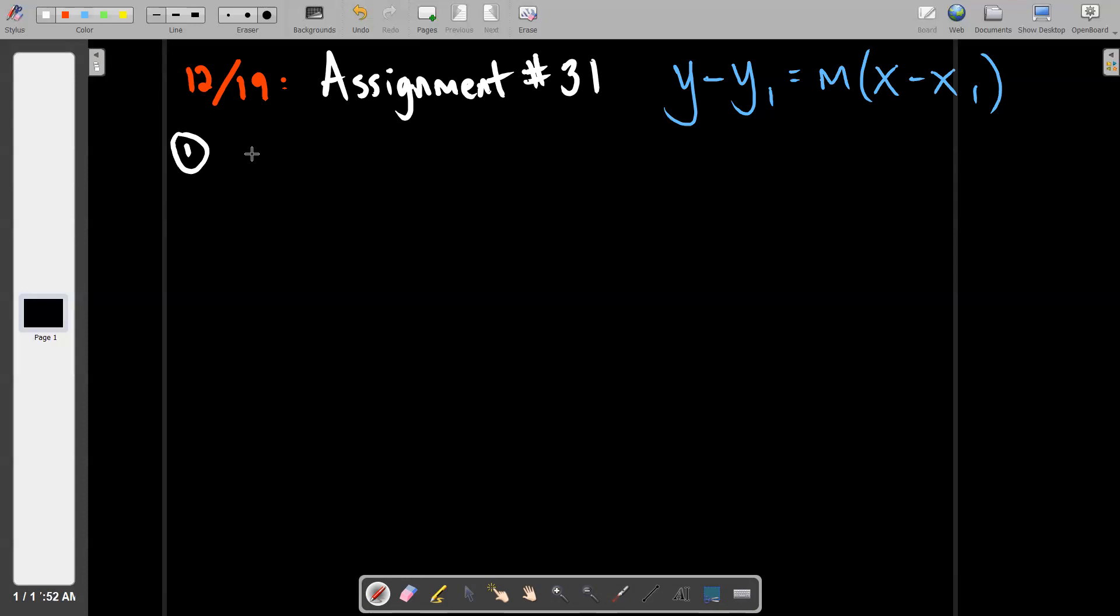In problem one we're going to put y minus two, because that's the y coordinate, equals two, because that's the slope, times x minus three, because that's the x coordinate. You've done this like a hundred times, right? So now in order to make it look like one of the answers on the right, I want to do a conversion where I distribute first. So I have y minus two equals 2x minus six, and then I'm going to add two to both sides.